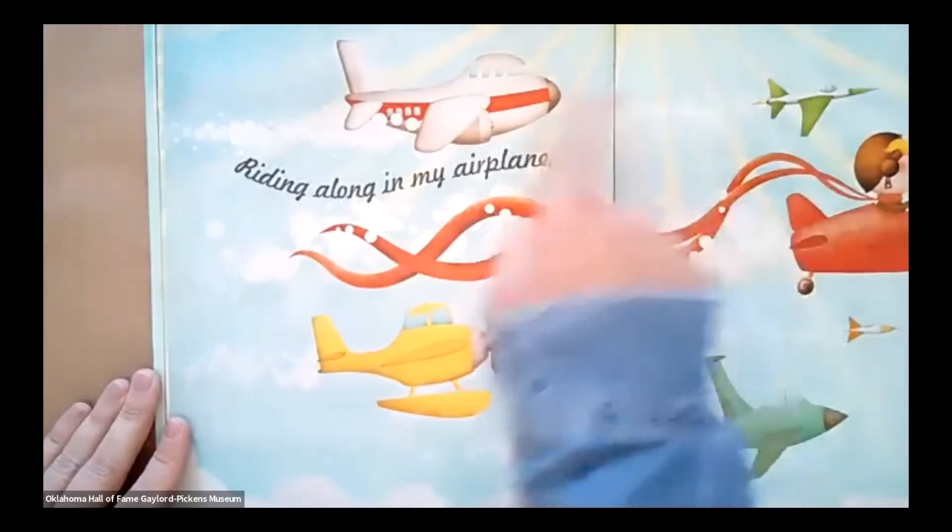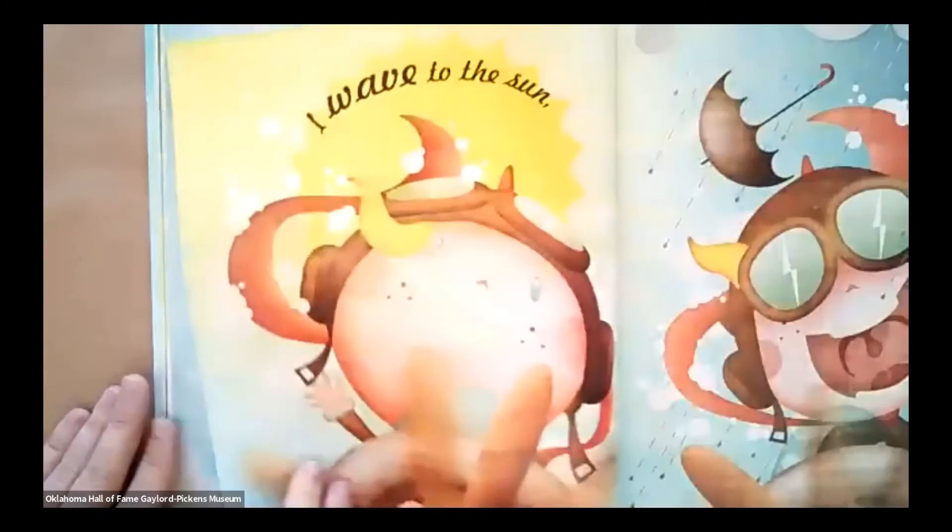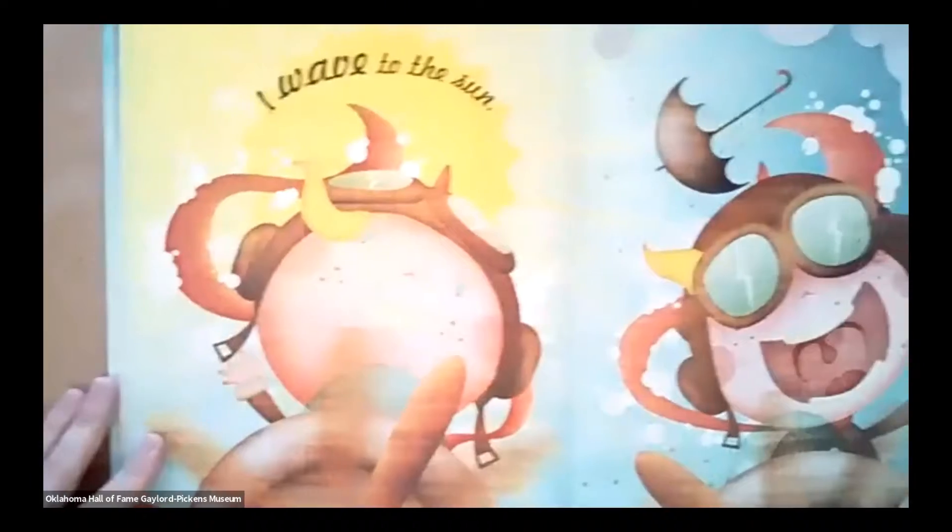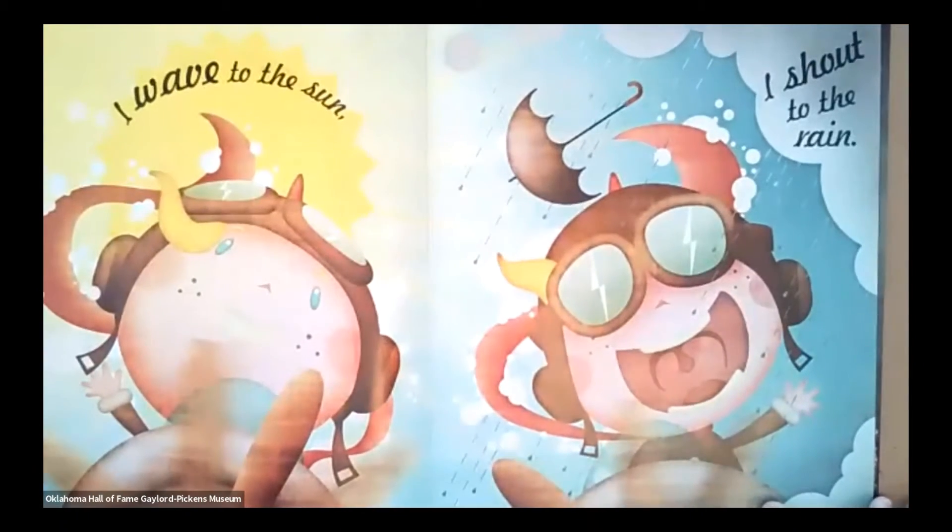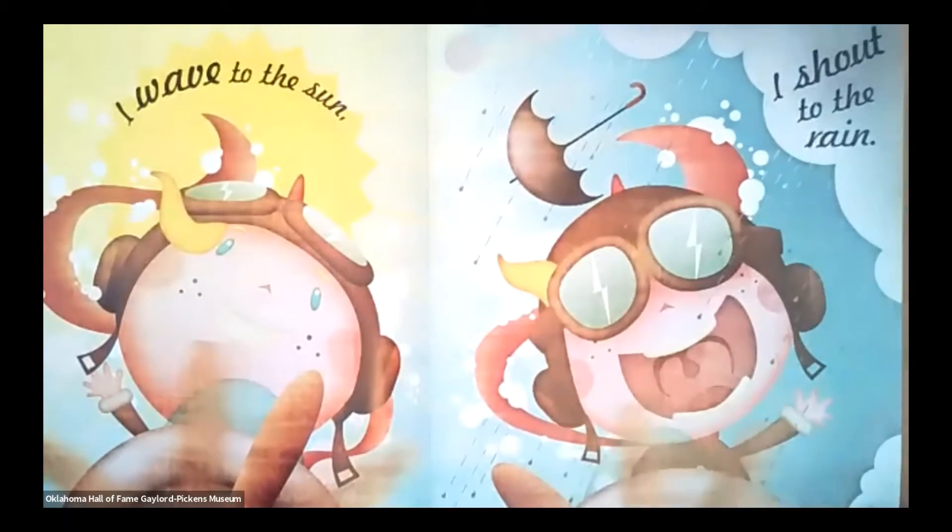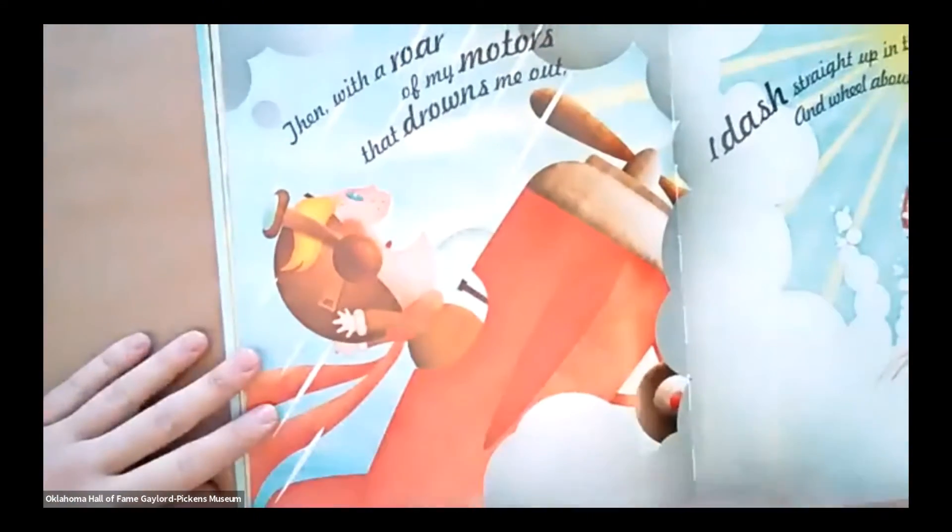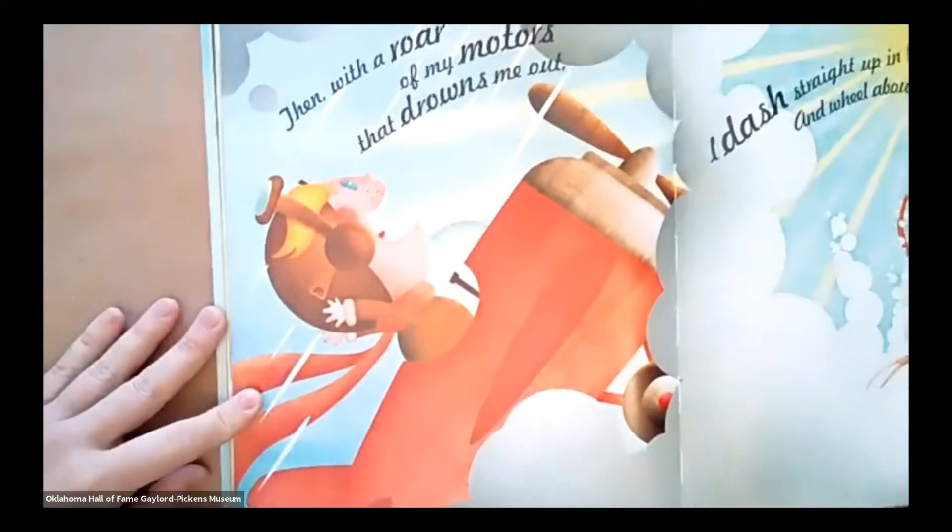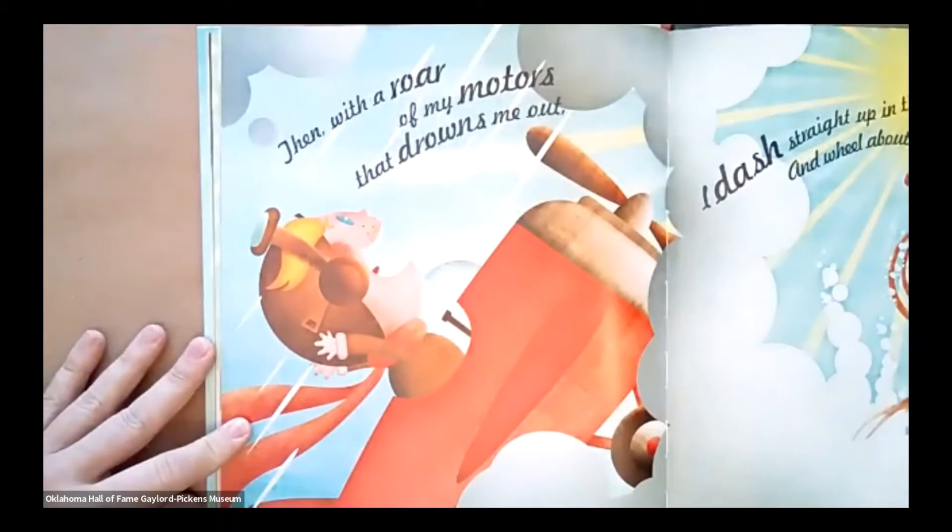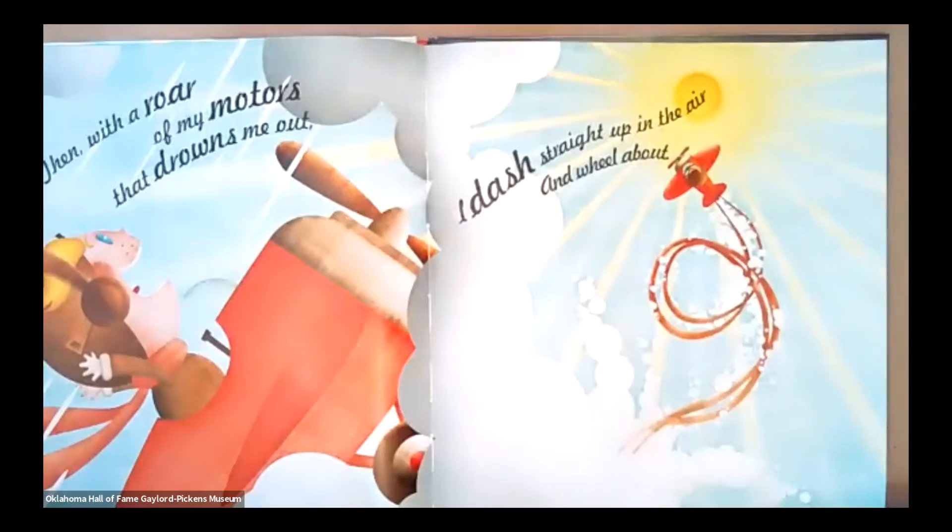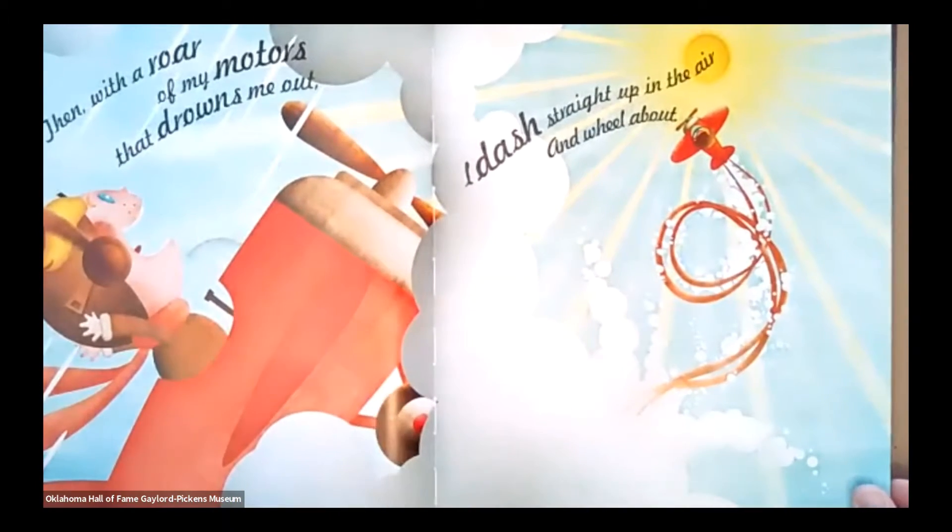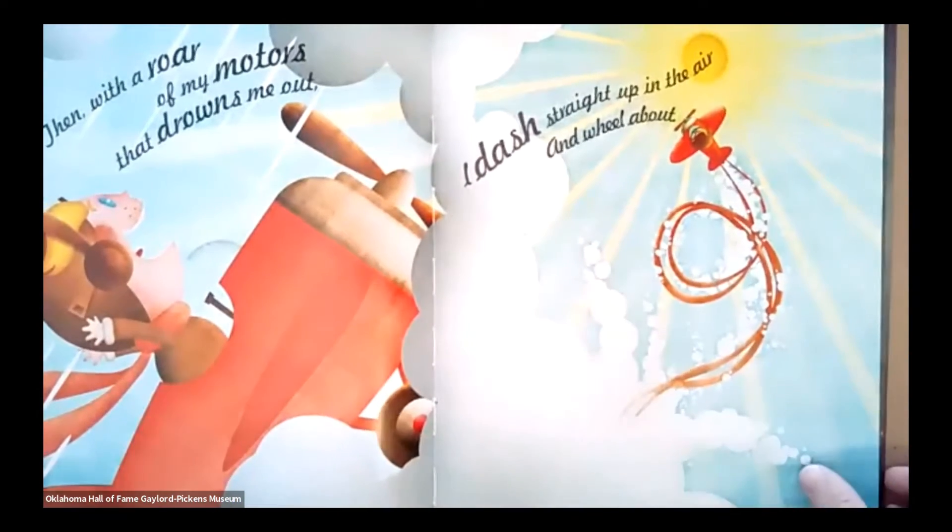Riding Along in My Airplane. All the other cool planes in the sky. I wave to the sun and I shout to the rain. There they are shouting to the rain. Then, with a roar of my motors that drowns me out, I dash straight up in the sky and wheel about. There they are, wheeling all about.